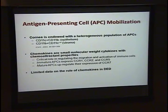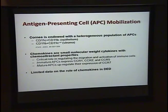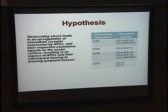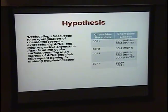Chemokines are small molecular weight cytokines with chemo-attracting properties, and they have a critical role in regulating the migration and activation of immune cells. To date, there is limited data on the role of chemokines in dry eye disease. We hypothesized that desiccating stress would lead to an upregulation of chemokine receptor expression by antigen-presenting cells and an increase in their respective chemokine ligands on the ocular surface, leading to ingress of APCs and subsequent homing to lymphoid tissues.